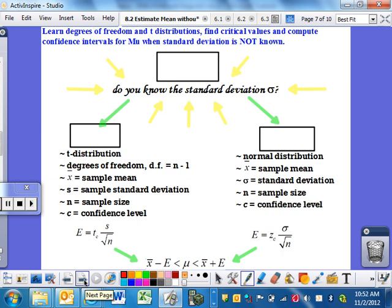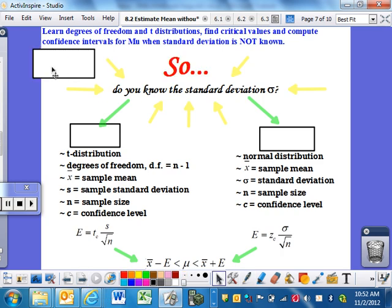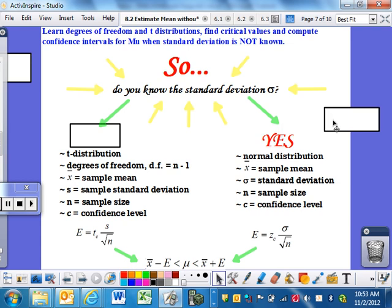Let me give you a broad overview. Do you know the standard deviation for the population, the Greek letter sigma? If you say yes, it was given to me, this is section 8.1, and you go back to use the normal curve. You have a Z score, the population standard deviation.